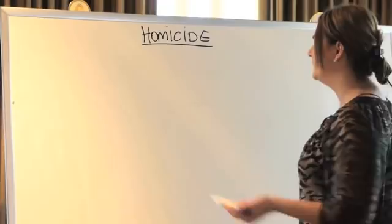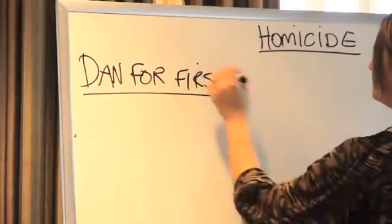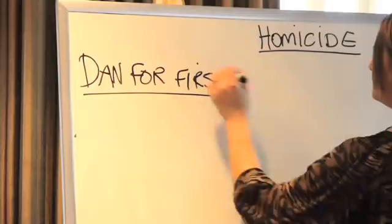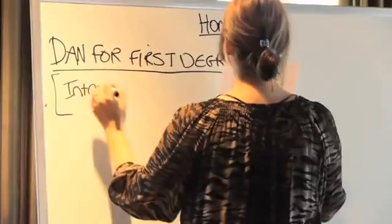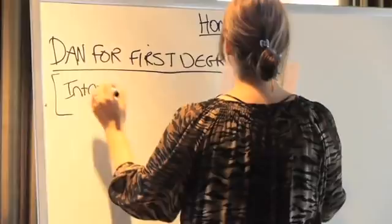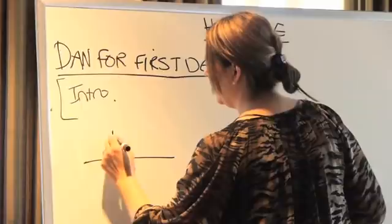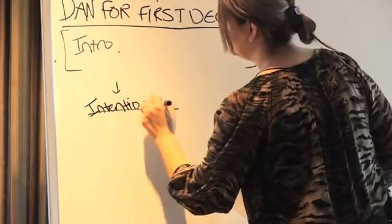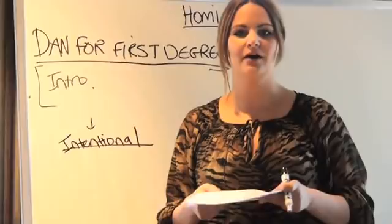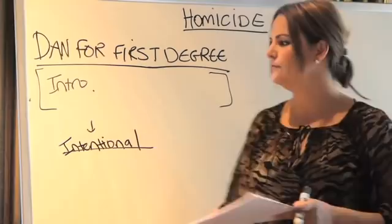No matter what, this approach will help you in any situation. The first area is first degree murder. On your approach, you'll see: first degree murder occurs when the defendant commits a killing that was intentional, premeditated, and deliberate. Those are your elements. You skip a line under your intro and head note and go into each element individually.